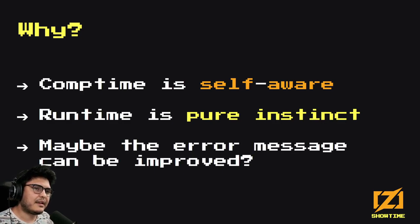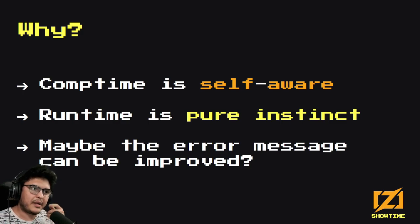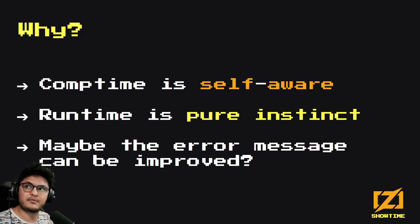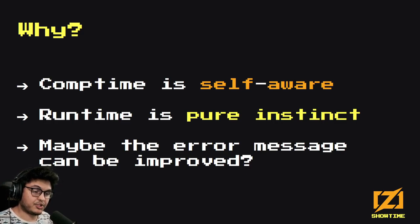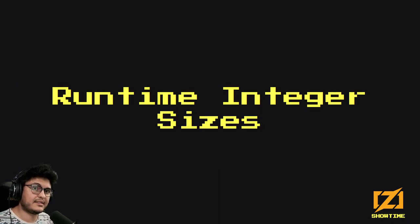The error message can probably be improved — it's a bit confusing. It assumes I'm trying to create a comptime int and then mutate it incorrectly, but my intention wasn't to do a comptime thing at all. In the future this can be improved. Now you know: if you get that error, sometimes it's because you forgot to specify how big your integer should be. Going back to runtime versus comptime: you have to specify the size because everything at runtime must have a specified size. That's how everything ties together. So let's talk about runtime integer sizes.